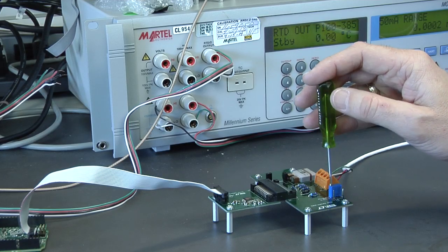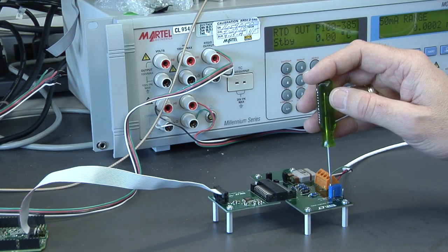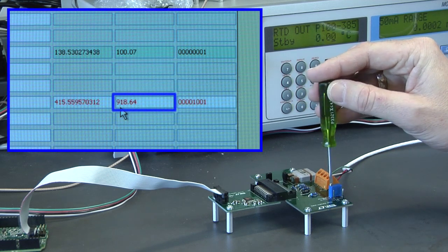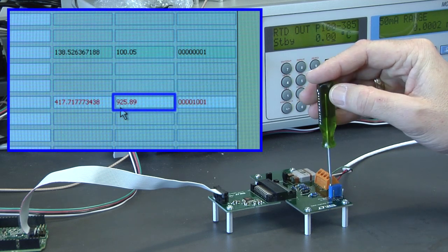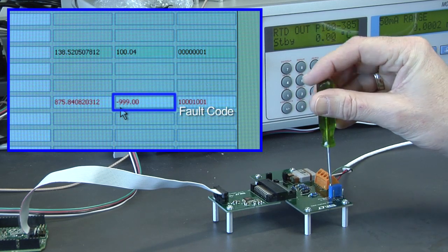The LTC2983 contains many fault reporting mechanisms. By adjusting the variable resistor RTD simulator, it is possible to create soft faults, sensor temperature above or below the RTD range, and hard faults, RTD short or open, R-sense short or open.